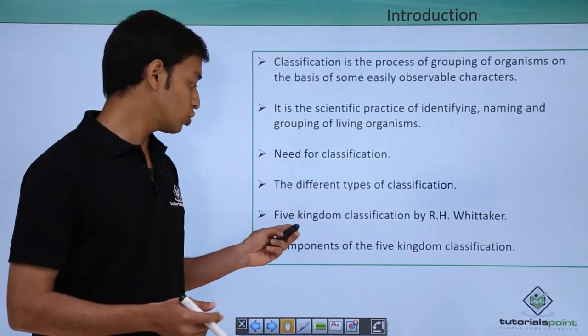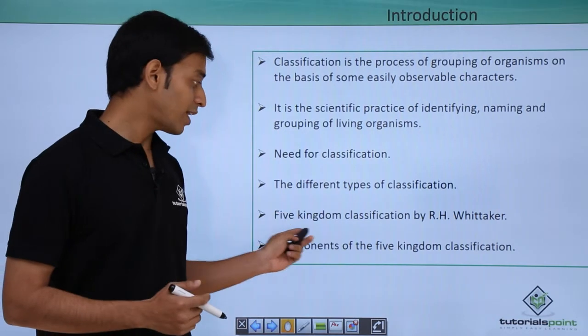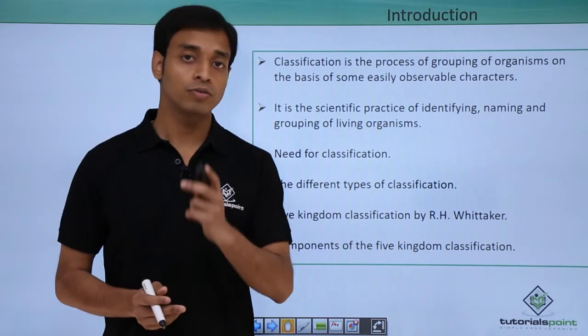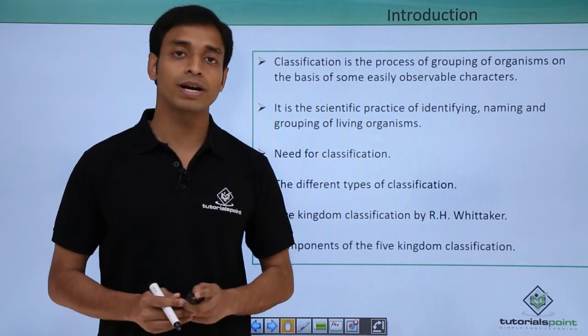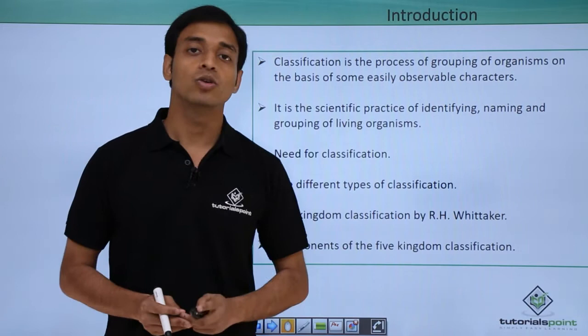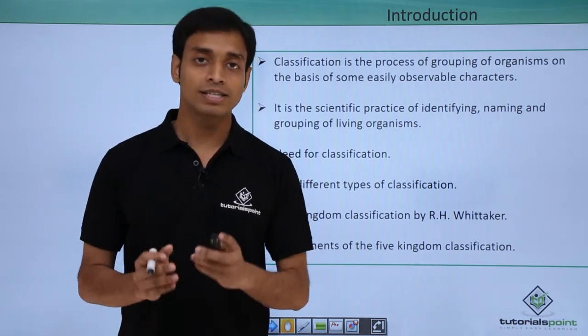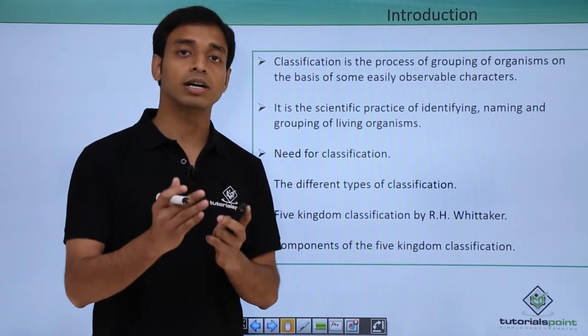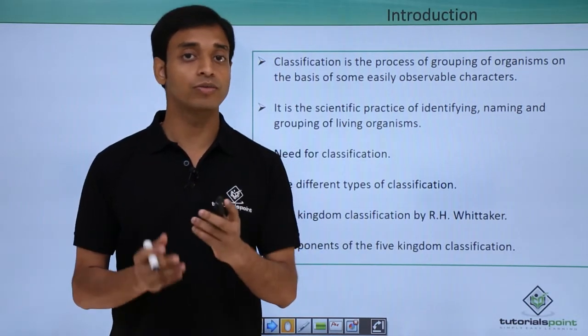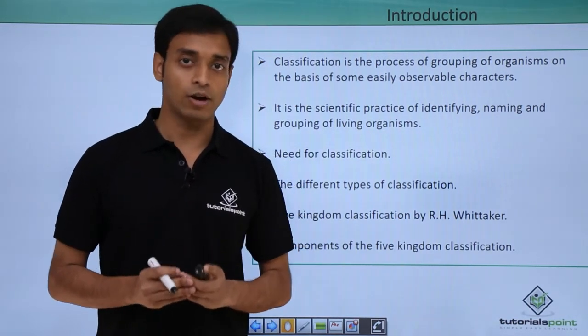We are also going to talk about the five kingdom system of classification, which was put forward by the famous scientist R. H. Whittaker. This is the most advanced type of classification which we follow till now.